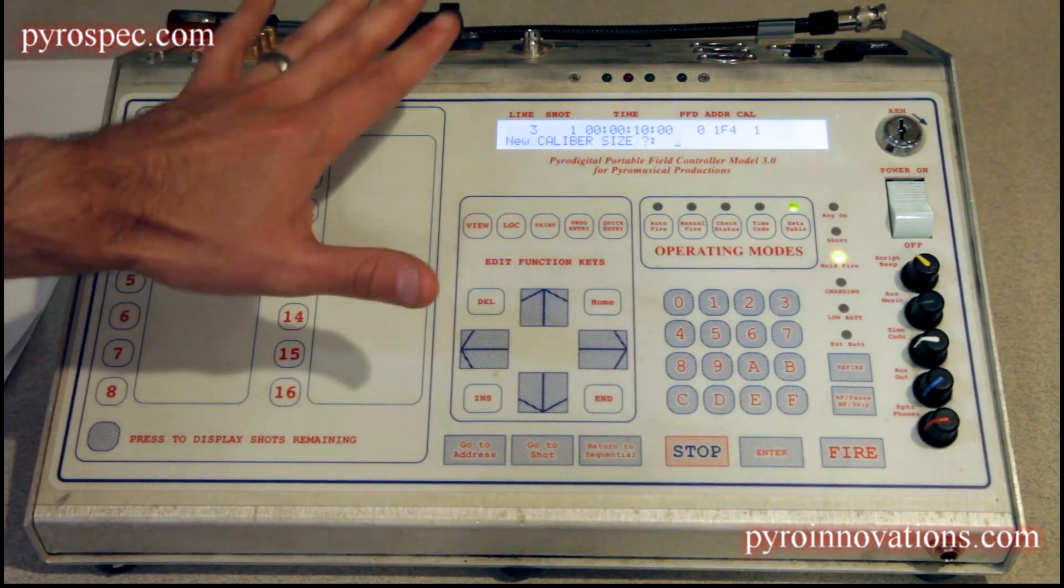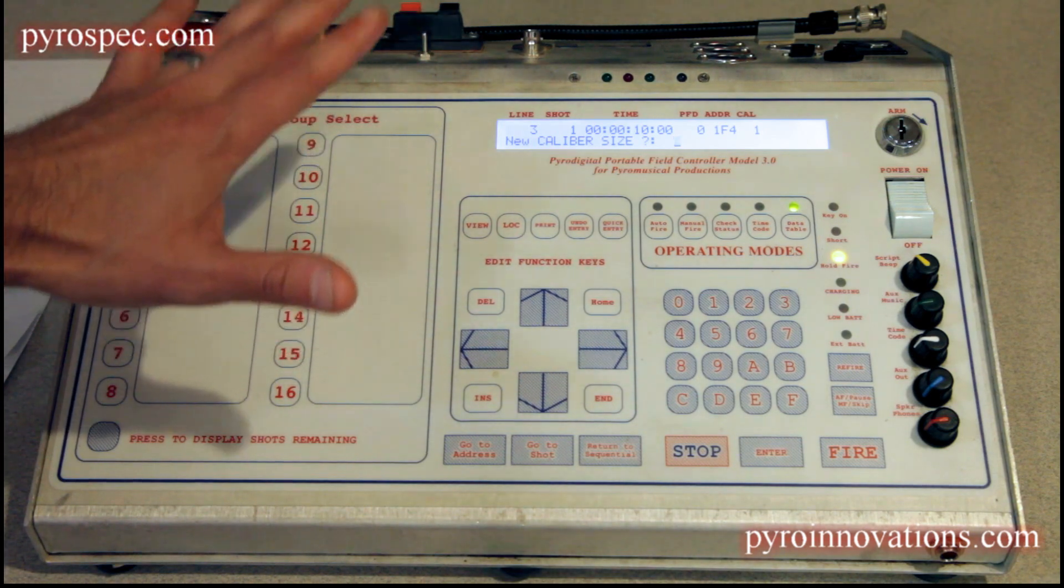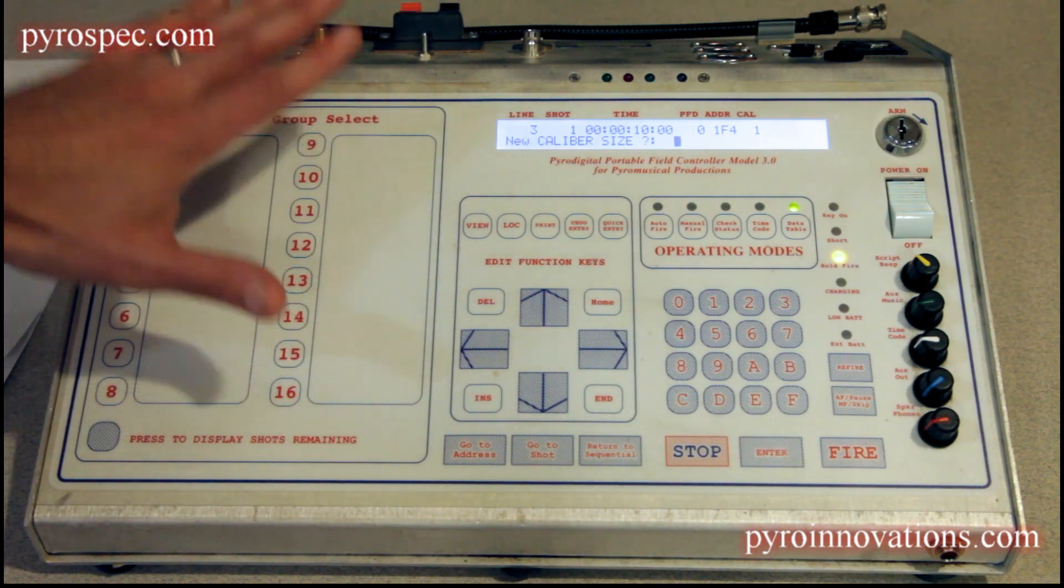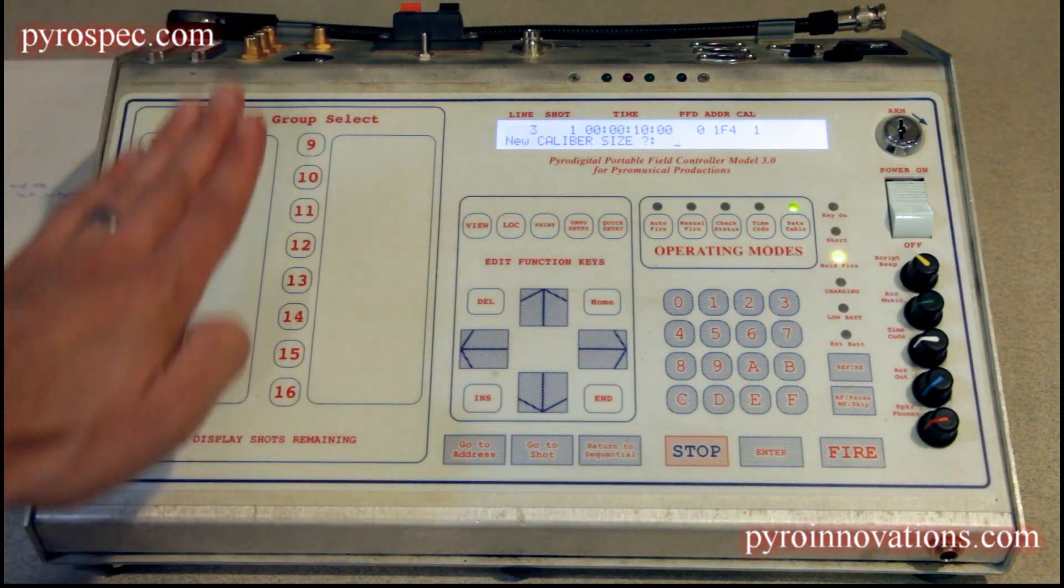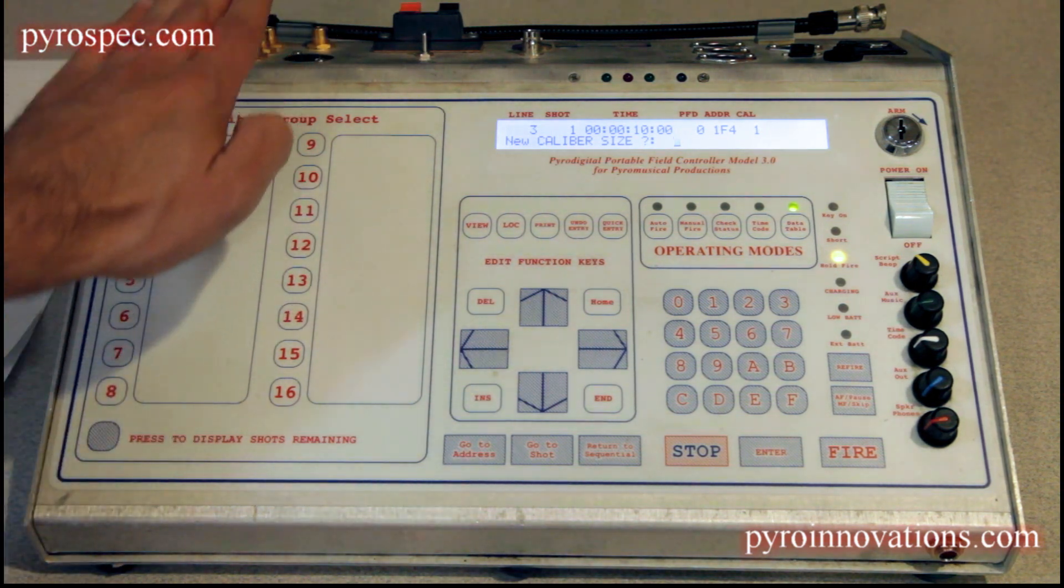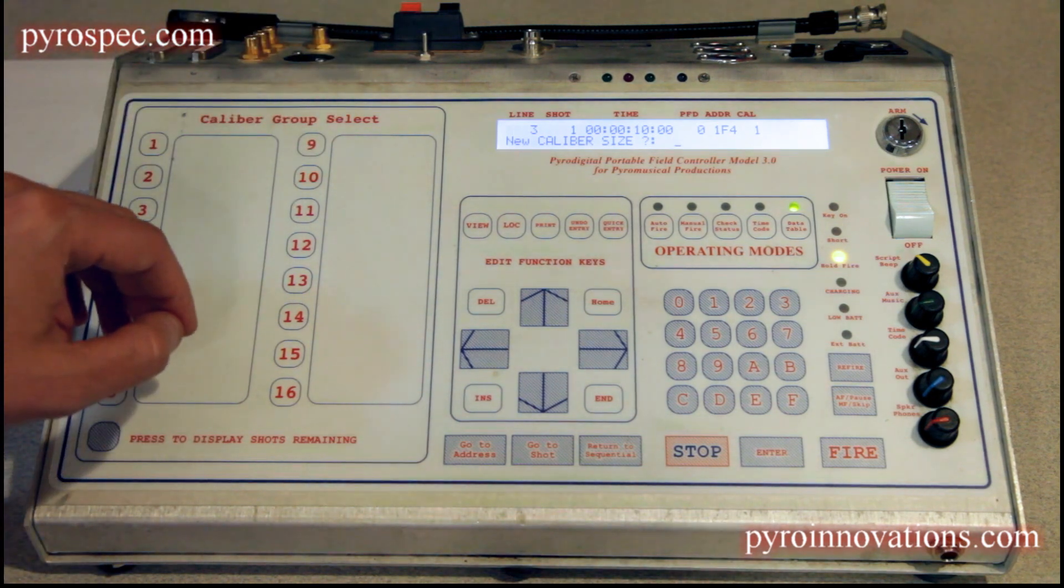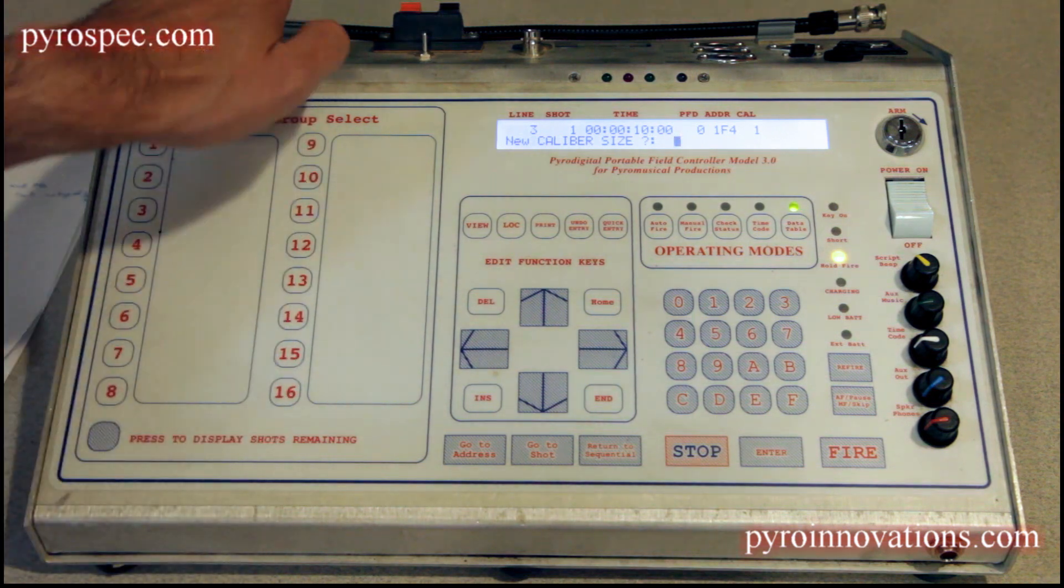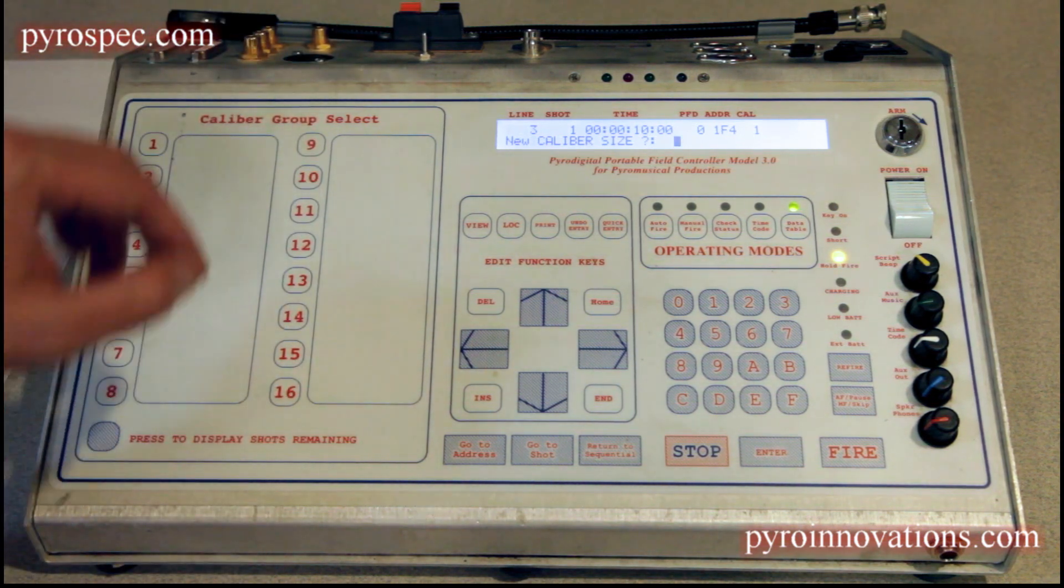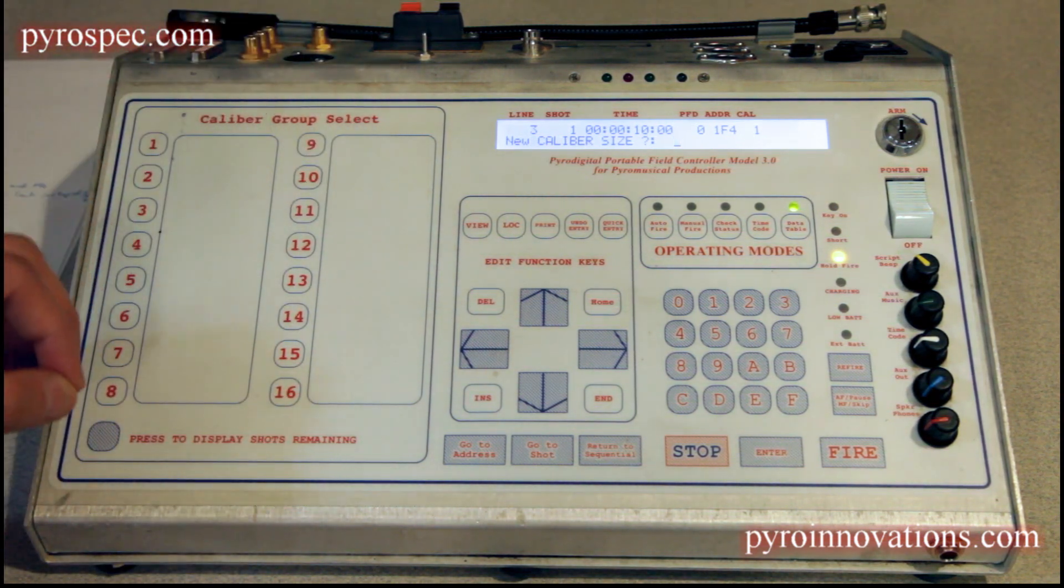Because the zipper fire event commands a new address to fire every 10 milliseconds, if you apply a new fire command to the same field module, even though it's at a different cue in that field module, 10 milliseconds after you gave it the first command to fire, you're not going to give it that full 30 millisecond firing pulse.